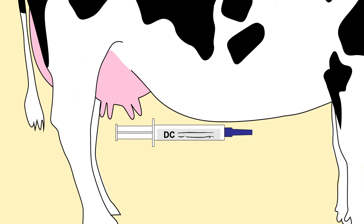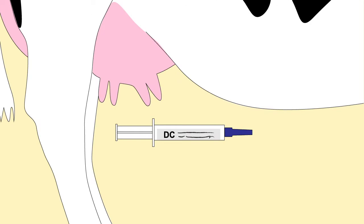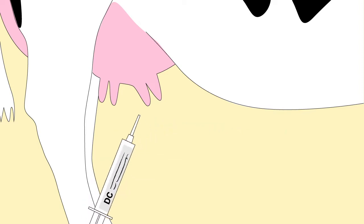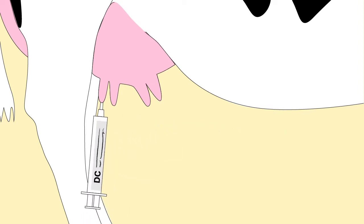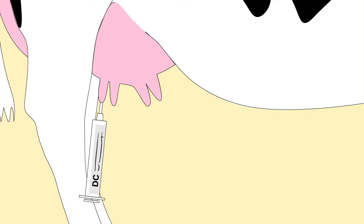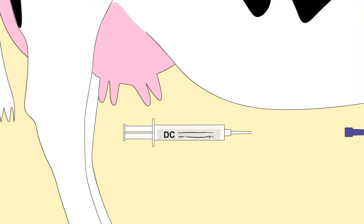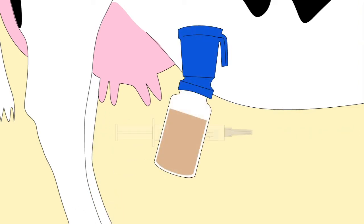The tip of the dry cow tube is inserted into the tit. Holding the tit end, the contents should be emptied into the tit. A full tube must be used per quarter. The tit should then be dipped.